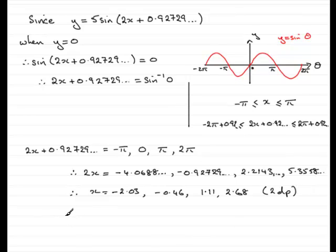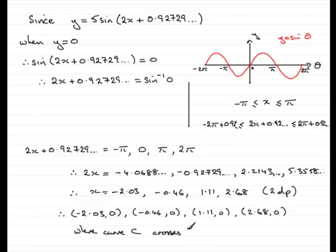Okay, so they did ask for the coordinates, so therefore, as for the coordinates, we're going to have minus 2.03 comma 0. We're going to have minus 0.46 comma 0 and 1.11 comma 0. And finally, 2.68 comma 0. These are all the points where the curve, where the curve C crosses the x-axis.